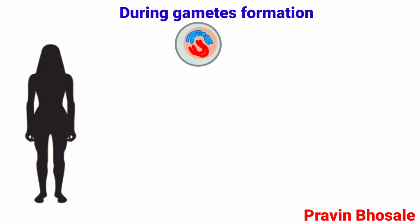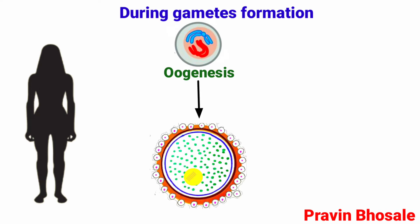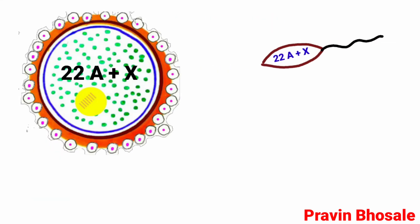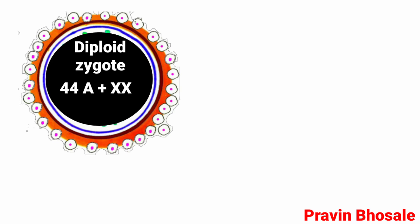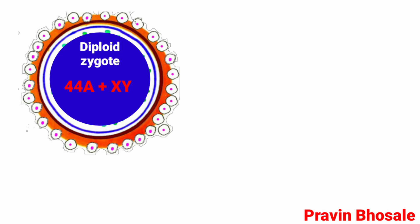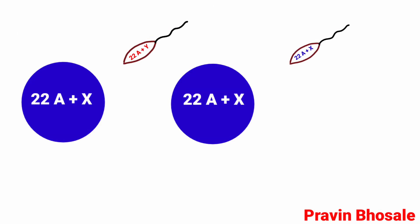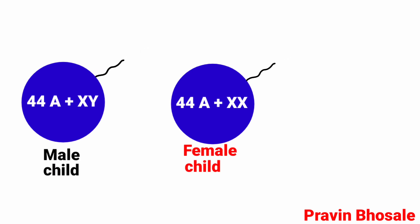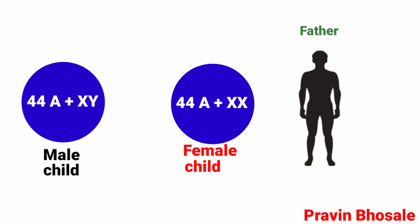In female, the diploid germ cells in ovaries undergo oogenesis to produce only one type of egg. All eggs contain 22 autosomes and X chromosome. Thus, human male is heterogamous and female is homogamous. If sperm containing X chromosome fertilizes the egg, a diploid zygote is formed that grows into a female child. This indicates that the sex of a child depends on the type of sperm fertilizing the egg, and hence the father is responsible for determination of the sex of the child and not the mother.